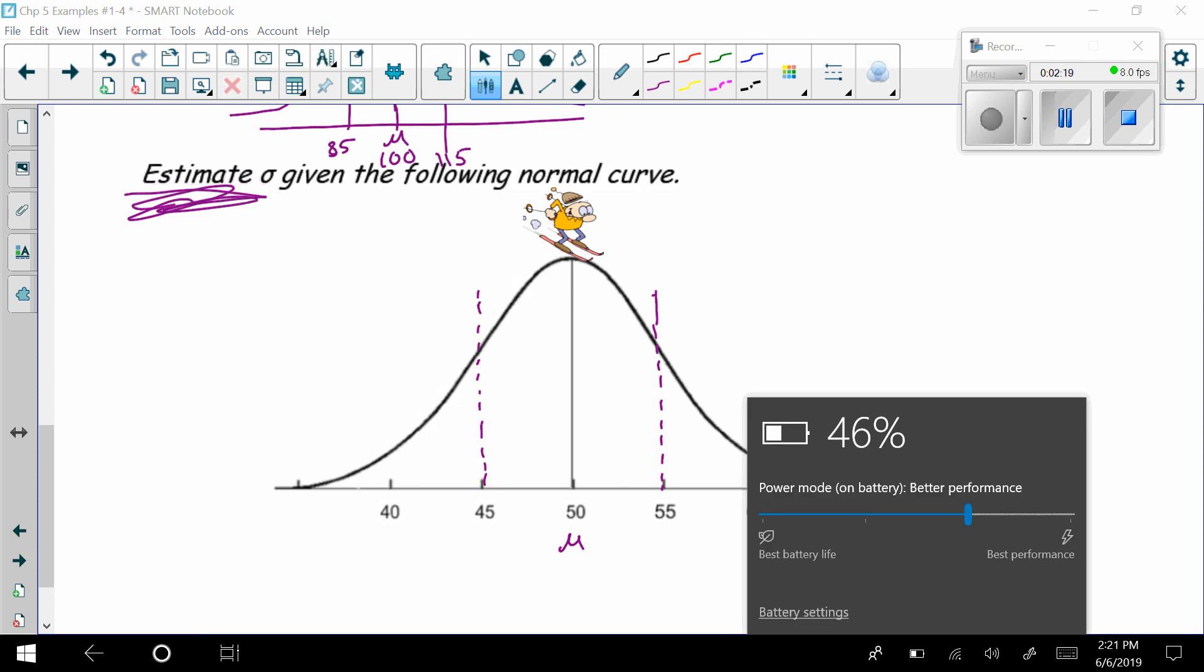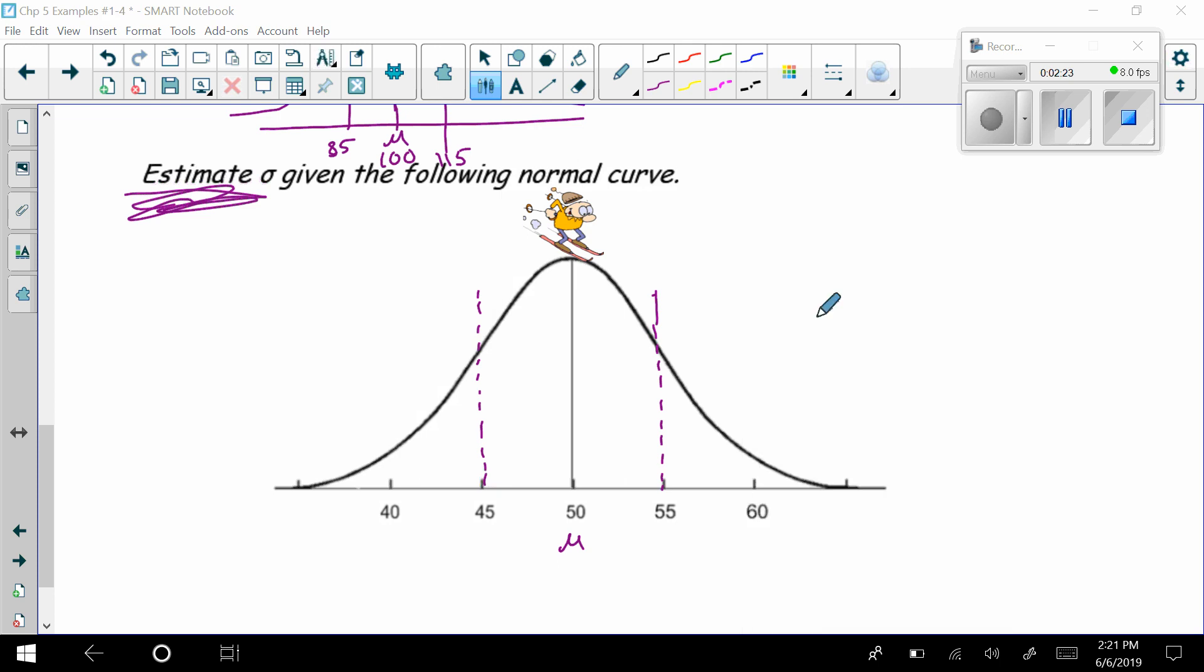Now, that does not mean that it's at 45. In fact, instead, what is the distance from here to here? Well, it's 5, right? And it should be the same over here. It's 5. So we're estimating sigma to be equal to 5 units, whatever we're actually measuring. This is a generic example, so we don't have a lot to go off of.